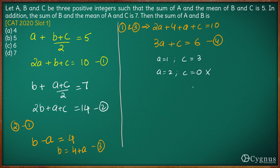If we increase the value of a further, c becomes negative which is not possible. So we have figured out the value of a and c. a is equal to 1 and c is equal to 3.